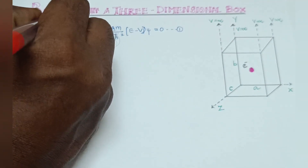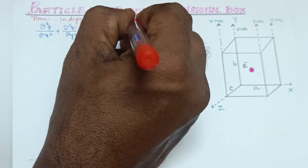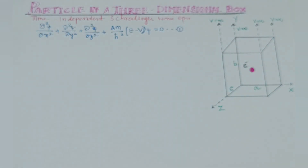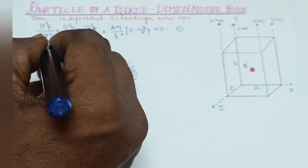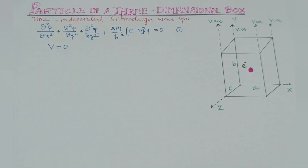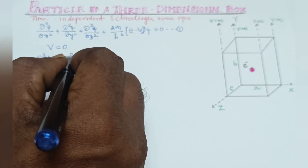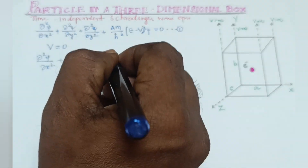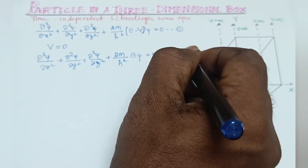The time-independent Schrödinger wave equation is: d²ψ/dx² + d²ψ/dy² + d²ψ/dz² + (2m/ℏ²)(E − V)ψ = 0. This is equation number 1. Since the potential energy V is equal to 0, we can write the equation as: d²ψ/dx² + d²ψ/dy² + d²ψ/dz² + (2m/ℏ²)Eψ = 0. This is equation number 2.